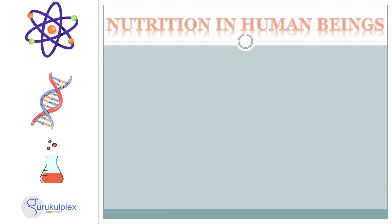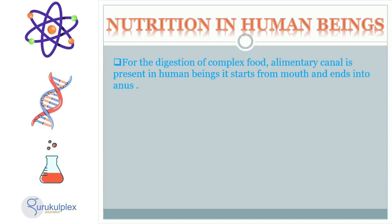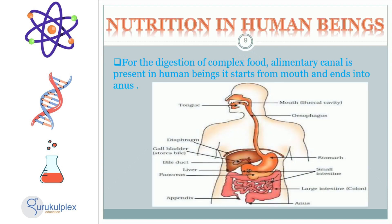In humans, the alimentary canal is the pathway for the digestion of complex food. The process starts at the mouth, where food is chewed and broken down into smaller pieces before it is swallowed. The food then passes through the esophagus and into the stomach, where it is further processed and absorbed. After the stomach, the food passes through the small intestine, where the majority of digestion and absorption takes place, before finally ending at the anus.